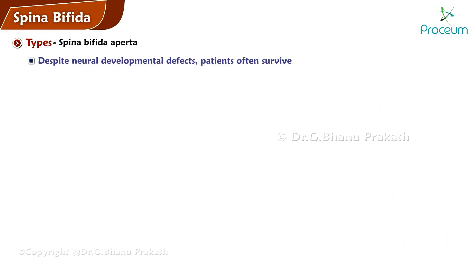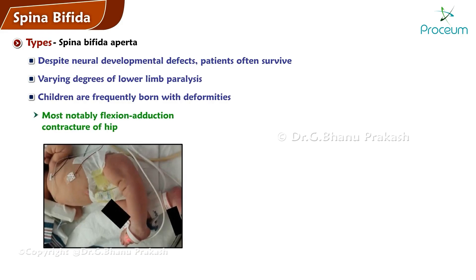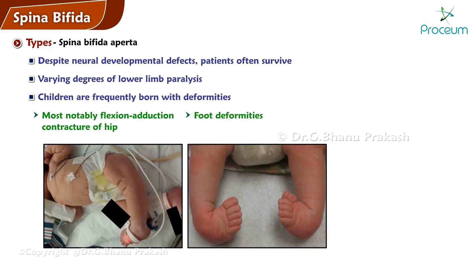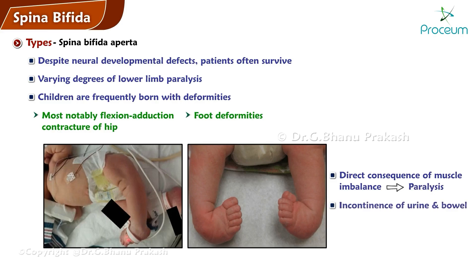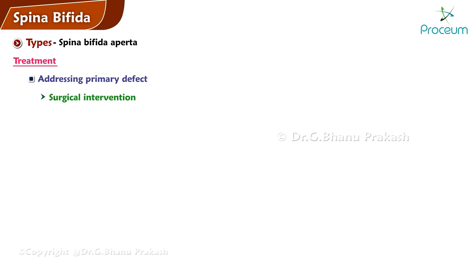Despite neural developmental defects, patients often survive; in these cases there can be varying degrees of lower limb paralysis. These children are frequently born with deformities, most notably flexion adduction contracture of the hip and foot deformities, which are the direct consequence of muscle imbalance resulting from paralysis. There might also be incontinence of urine and bowel. Management encompasses addressing the primary defect of spina bifida, usually involving surgical intervention where the defect is repaired and closed to prevent further damage and infection.